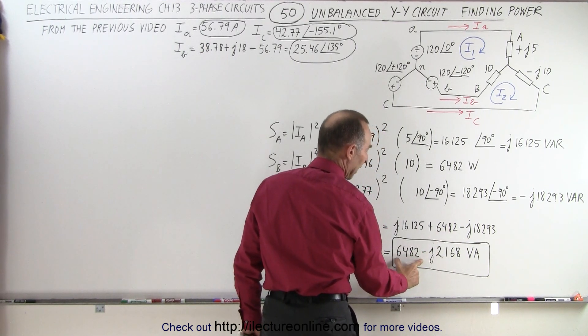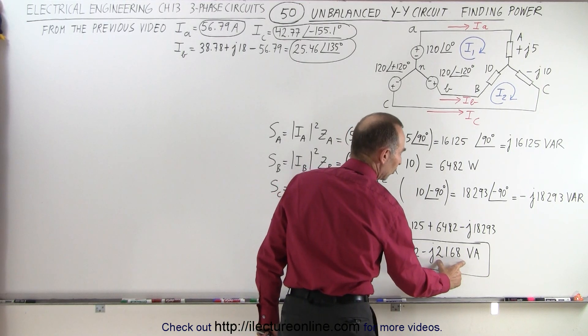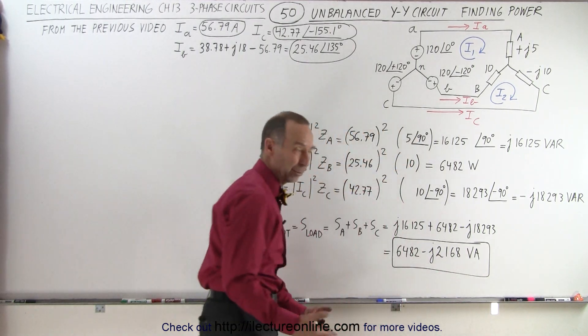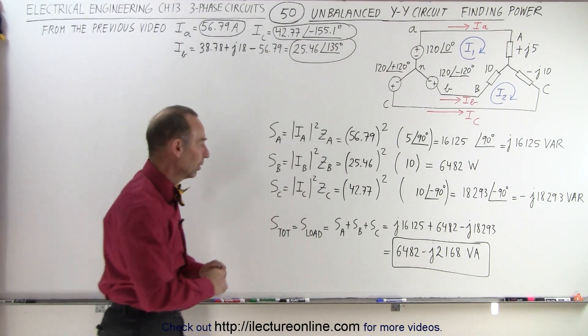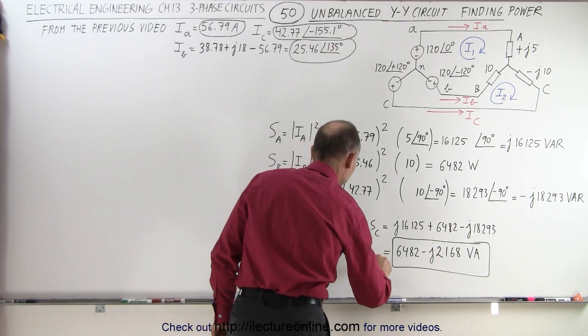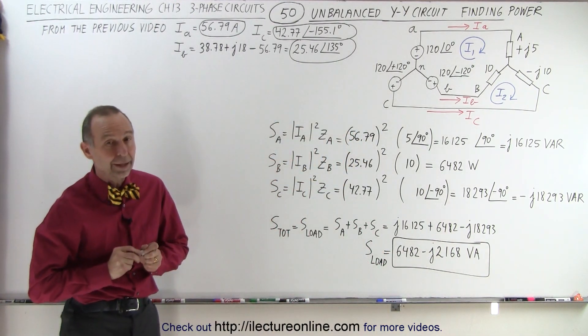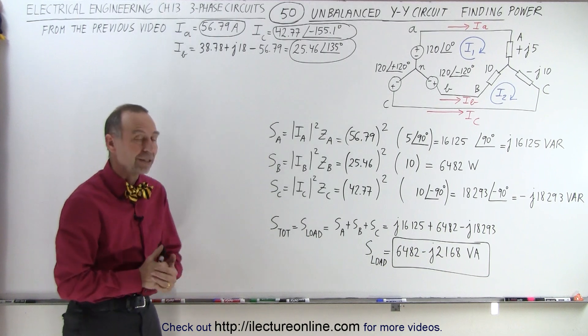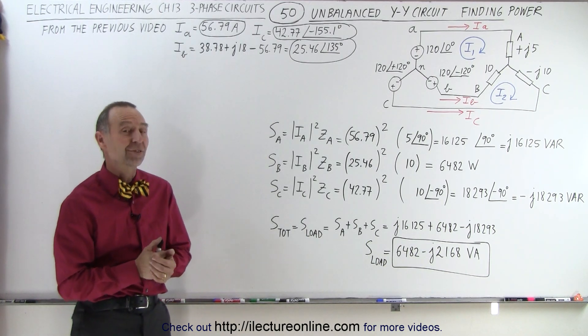notice a real part magnitude of 6,482 and an imaginary part of -2,168. There we write VA (volt-ampere) because it's the complex power. So this is the complex power of the load, S_load, equal to this value in VA. That is how we find the power on a Y-Y load problem like that. That's how it's done.